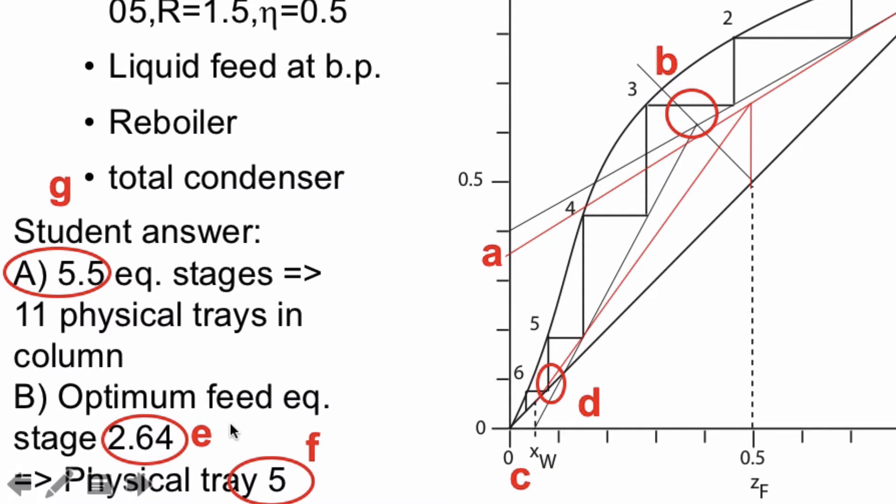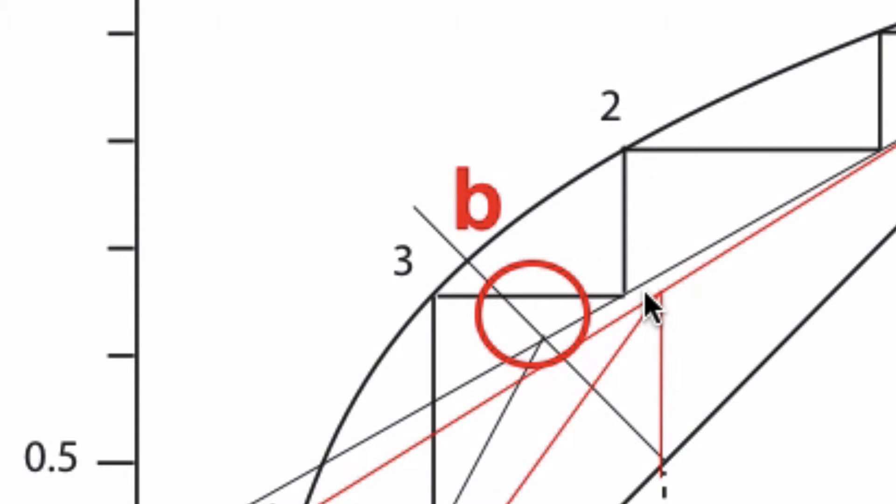e: the student says that the optimum feed location is 2.64. That can't be right. If you see here and if you go directly above that, that's clearly less than half the distance from here to here compared to there to there. So that must be less than 2.5, right.